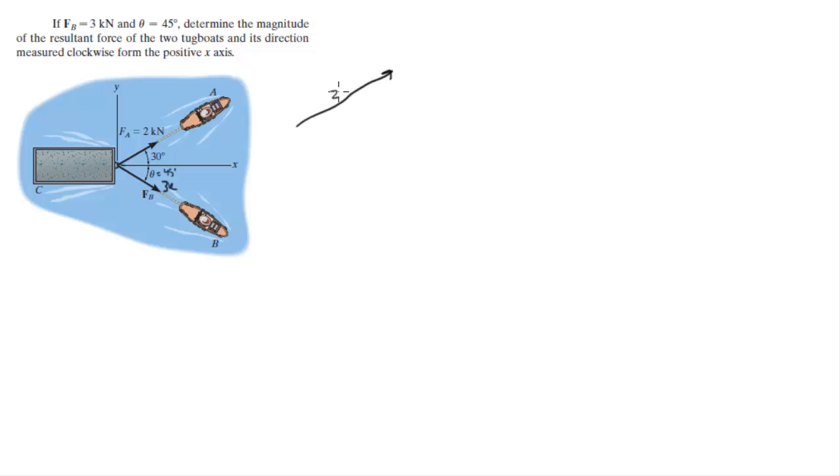This is the 2k. This is the 3k. This should be 30 degrees. Now if I redraw this force right here, I'm going to get that the resultant force is aiming this way, since 3k should be longer than 2k.